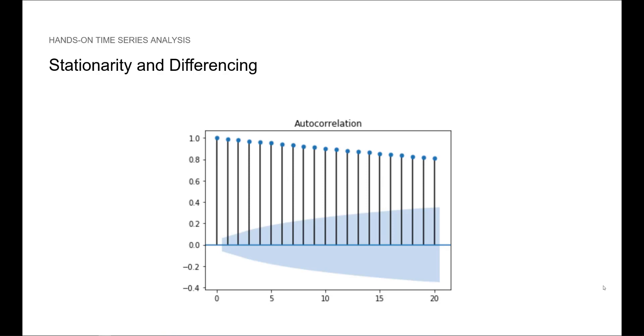Here we see the ACF plot for a time series. We saw this plot in the previous lesson, and we know that this time series with a trend will have a similar ACF plot. Therefore, we can also say from the correlogram that the time series is not stationary.